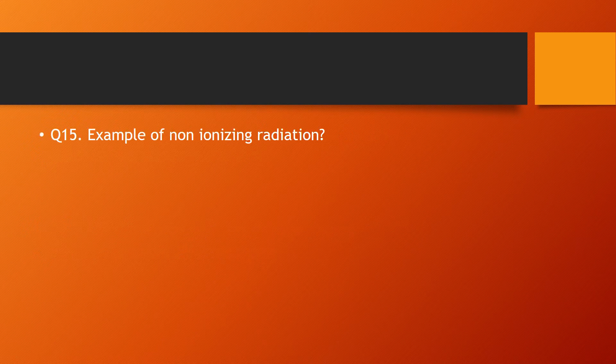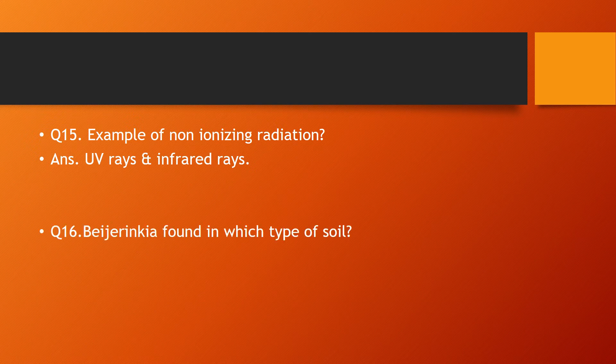Question number fifteen: example of non-ionizing radiation — the answer is UV radiation and infrared rays. Question number sixteen: Beijerinckia is found in which type of soil? — the answer is Beijerinckia is found in all types of soil, including acidic soil.